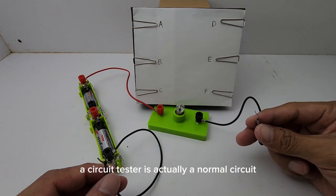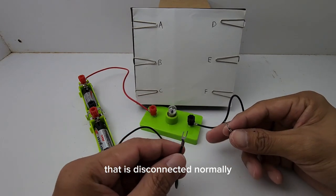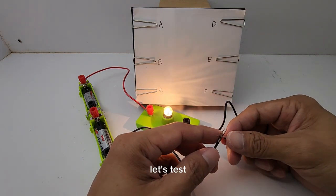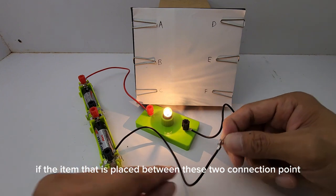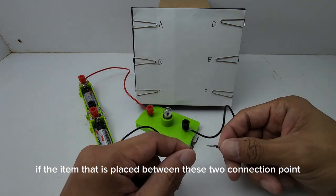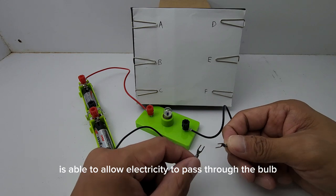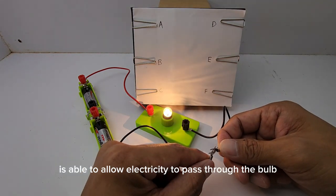A circuit tester is actually a normal circuit that is disconnected normally at first. Let's test. If the item that is placed between these two connection points is able to allow electricity to pass through, the bulb will light up.